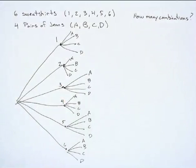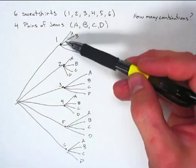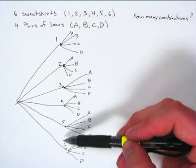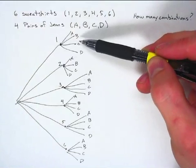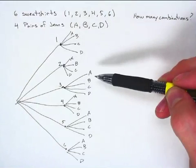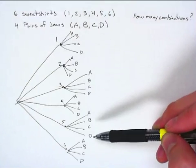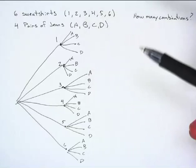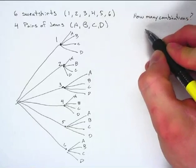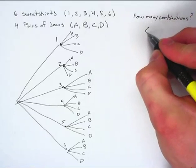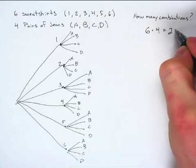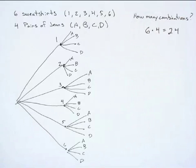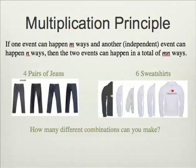There is my completed tree diagram. If I count them out, I have six different branches, and then four different branches stemming off from each of those. Every one of the six sweatshirts is paired with all four jeans. Simply, the multiplication principle says that if you have independence, you can multiply to get your total number of combinations. So six times four is 24 — that's 24 total combinations.